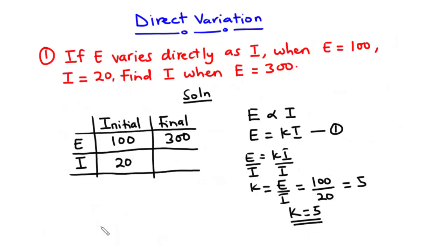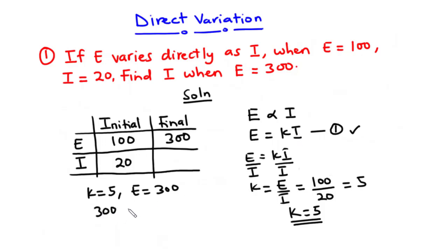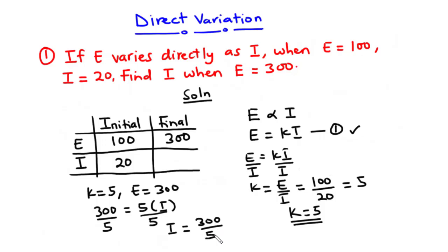Now that we have k equal to 5 and the final value of e equal to 300, we use the equation e equals ki. Substituting: 300 equals 5 times i. Dividing both sides by 5, we get i equals 300 divided by 5, which is equal to 60. So the final value of i is 60.